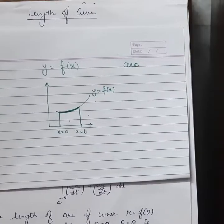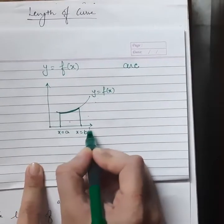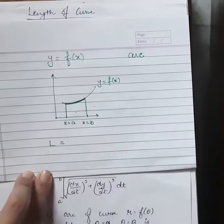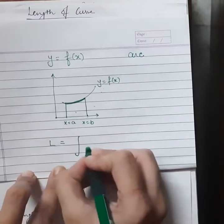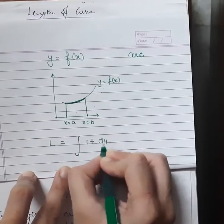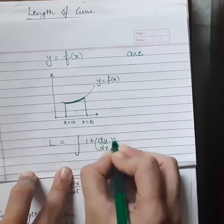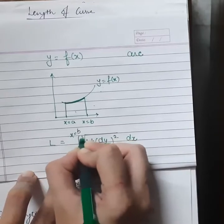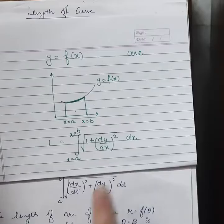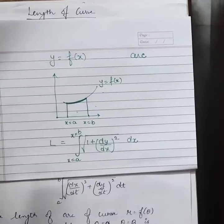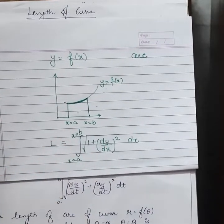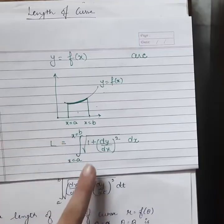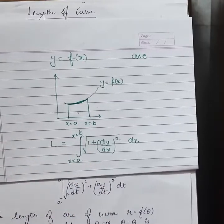The length of the curve is calculated as L equals the integral of the square root of 1 plus (dy/dx)² dx, between the desired limits x equals a to b. This is the formula to calculate the length of the curve between the points x equals a and x equals b.